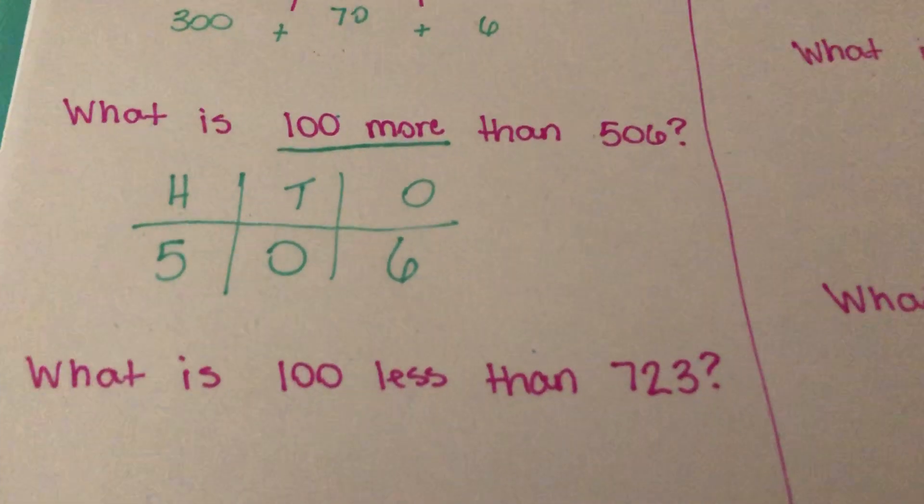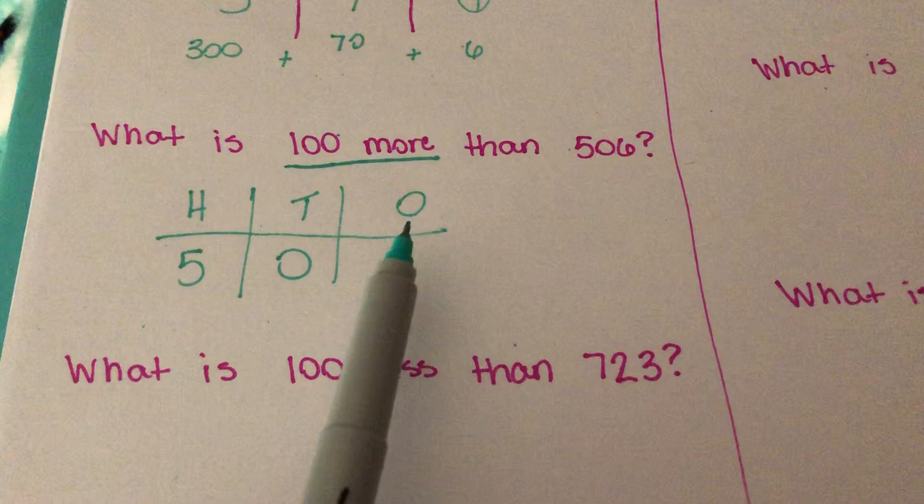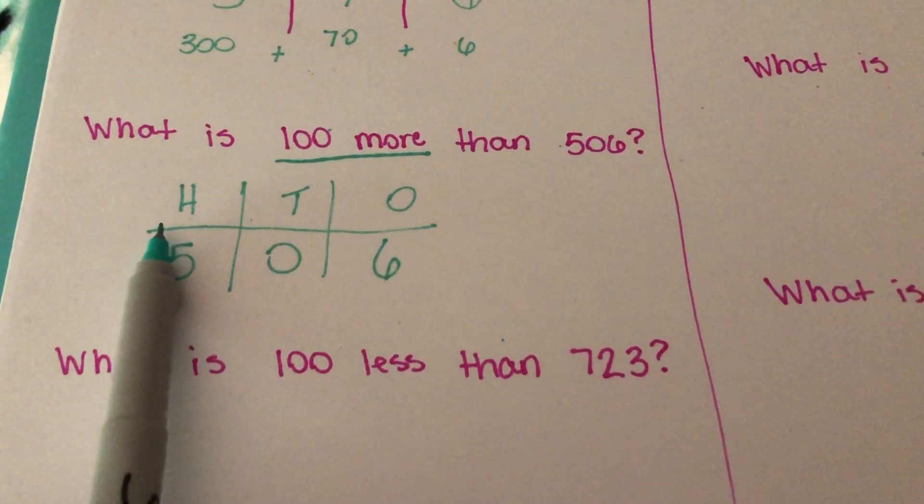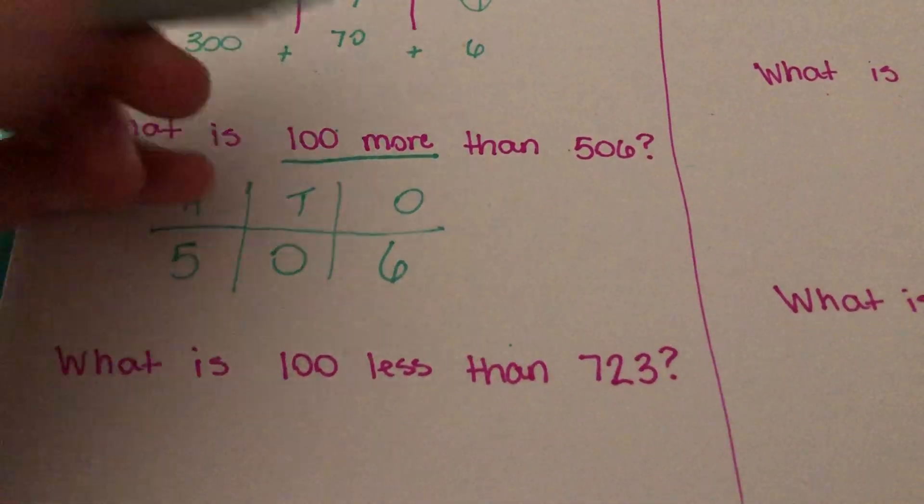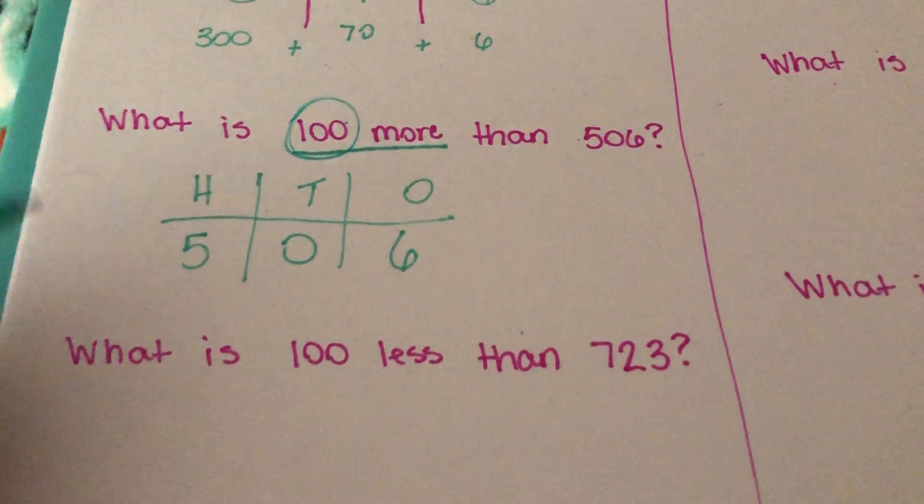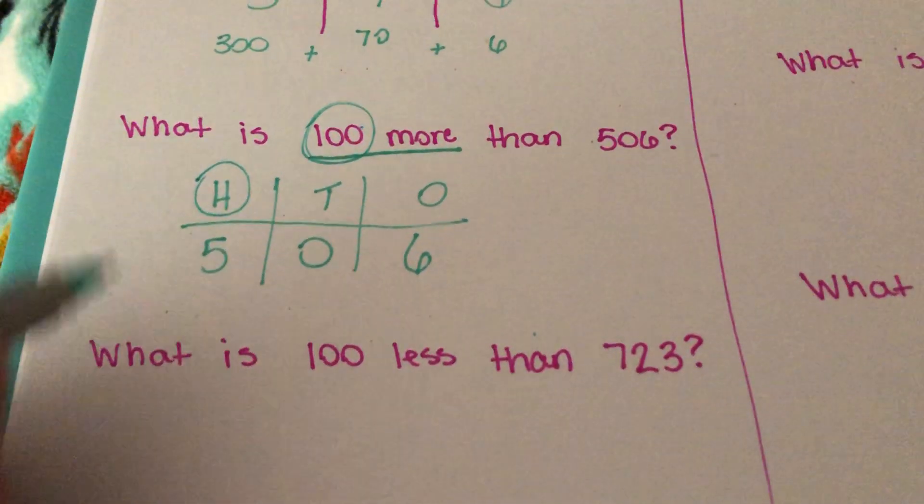So the first thing you need to ask your child is, okay, well, what place are we going to look at? Are we looking at the ones, the tens, or the hundreds? We're looking at the hundreds because the number 100 is right there. Let's take a look at the hundreds place.